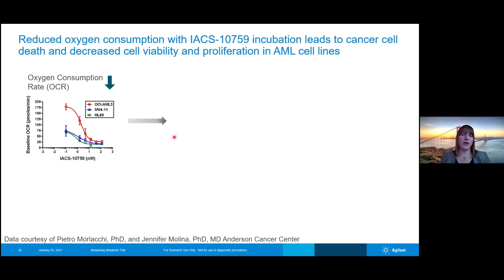This particular compound had a lot of favorable qualities: it had a low nanomolar activity in vitro, it was also low in toxicity, and had a good pharmacokinetic profile. So all of these combined to make them choose and study this compound in more detail. As expected, when acute myeloid leukemia cells are incubated with this IACS inhibitor, there is a decrease in baseline oxygen consumption rates in a dose-dependent manner.